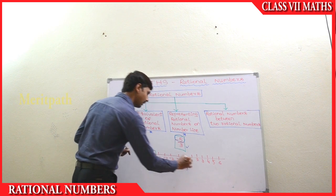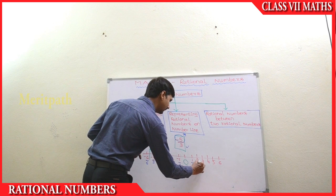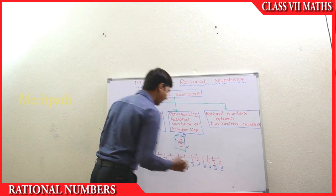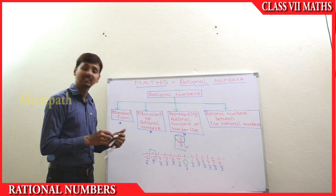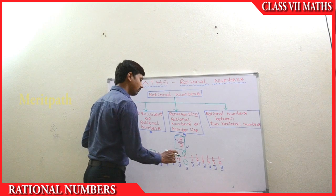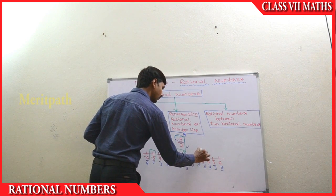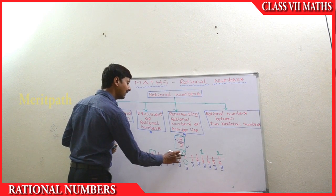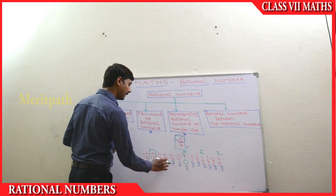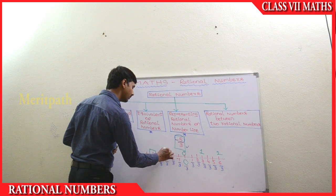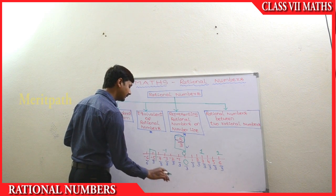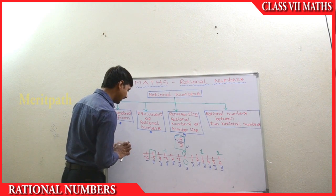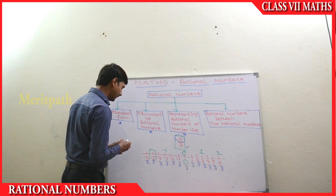We label: 1 by 3, 2 by 3, 3 by 3, 4 by 3, 5 by 3, and 6 by 3. We know that 0 by 3 is nothing but 0. And 3 by 3 is 1, so we get 1 here. And 6 by 3 is 2, so we get 2 there.